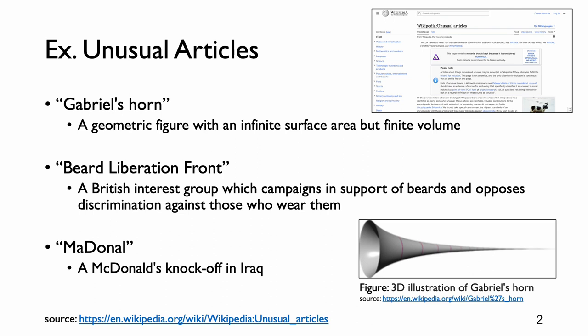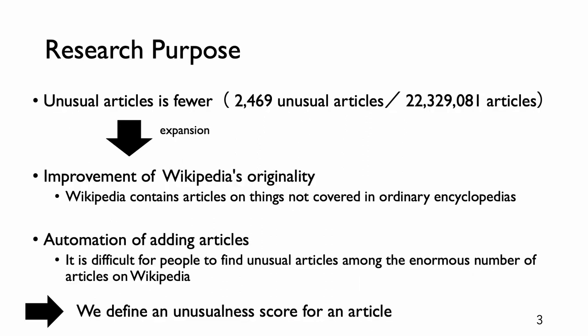You may think they are funny articles. The problem we addressed is that the number of unusual articles is small. Our aim is to develop methods for discovering articles that can be added to the unusual articles section and thereby expand it. Achieving this aim will lead to an improvement in Wikipedia's originality, because Wikipedia contains articles on things not covered in ordinary encyclopedias. Also, this goal will lead to automation of adding articles.